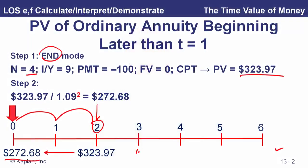The interpretation of this would be: if there's an account that pays 9% compounded annually, we put $323.97 in the account today and we could take out these four payments of $100, $100, $100, and $100. So that's how much it would cost us to fund this particular four-payment annuity.